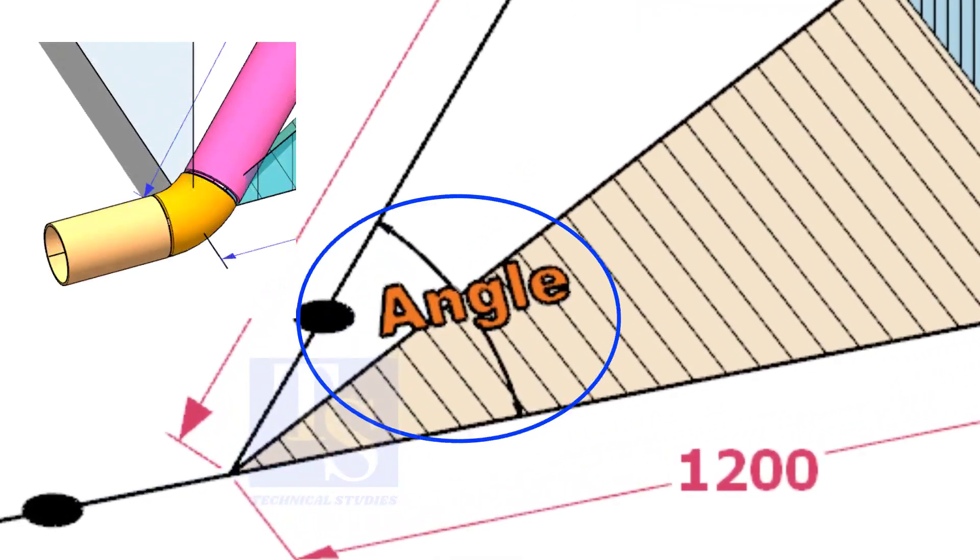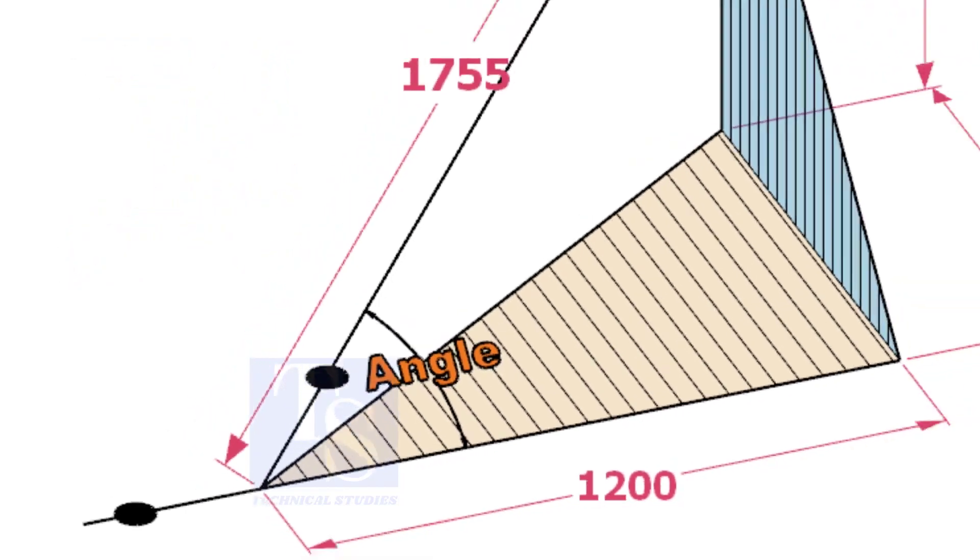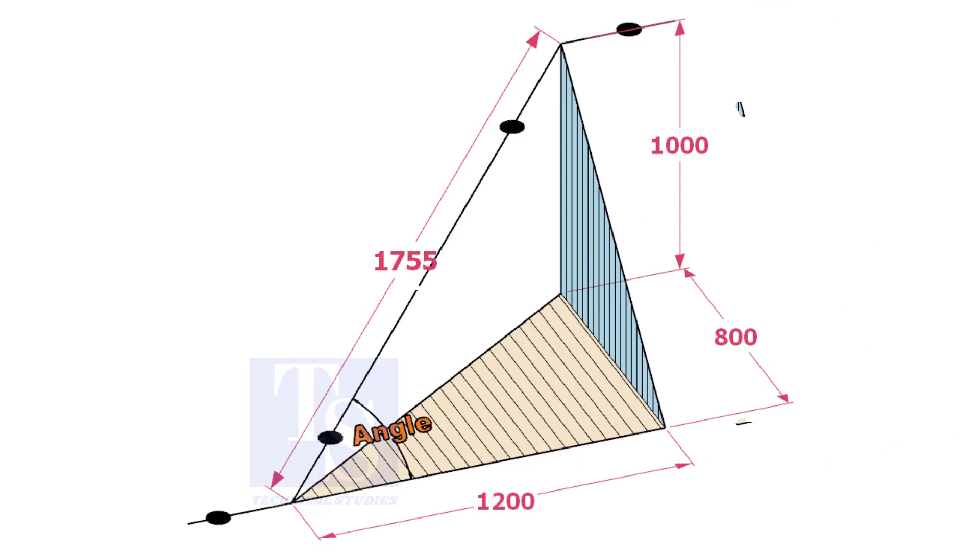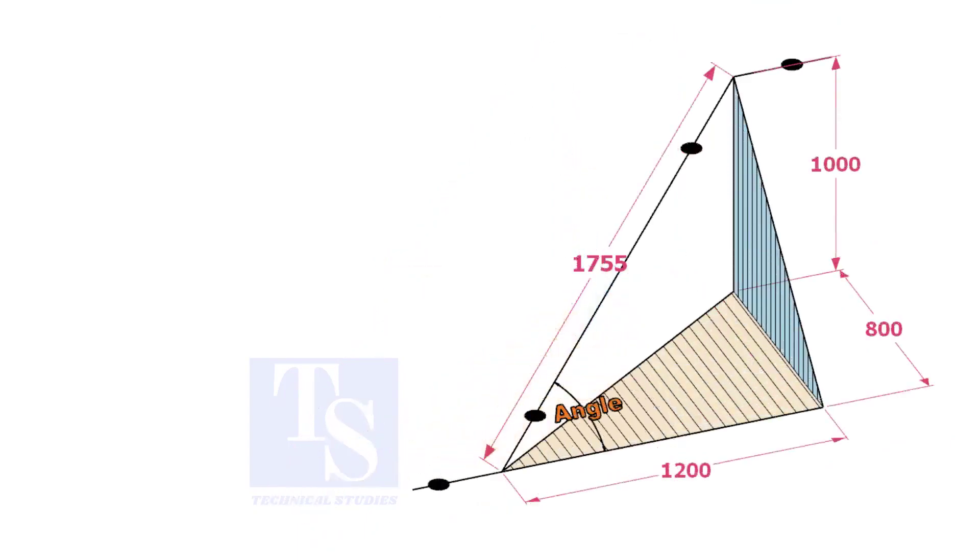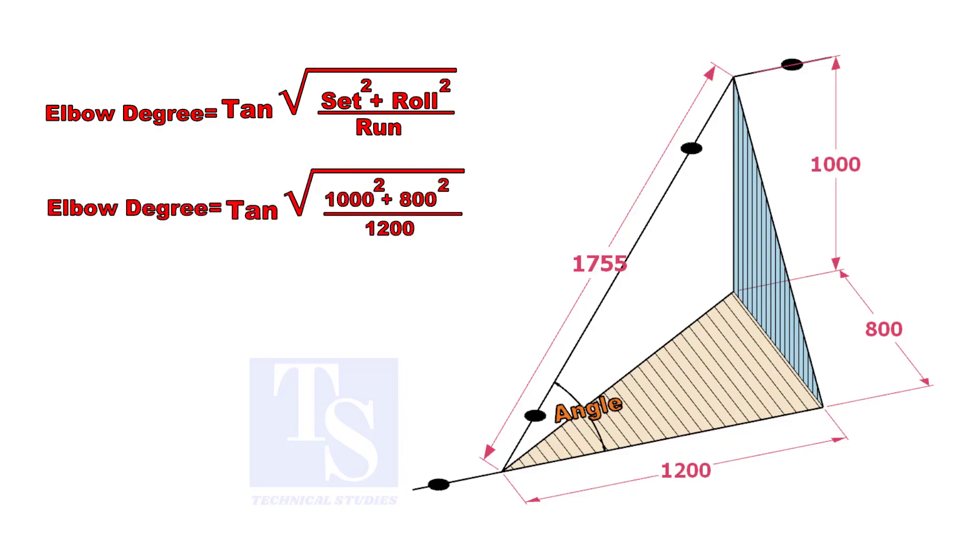Let us calculate the degree of the elbow or the including angle. The formula is the root of the set and the roll divided by run into tan.